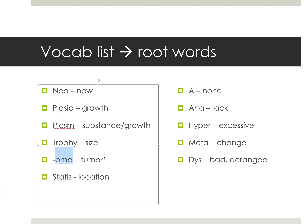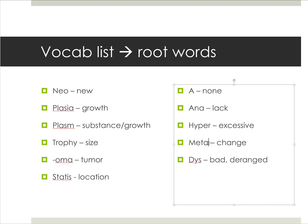'Static' refers to location — when you're static, you're in one place, so 'stasis' refers to location. 'Metastatic' — 'meta' refers to change. We've already gone through 'metaplasia,' which is a change in substance when tissue type converts to another. So 'metastasis' is a change in location, and that's a very important cornerstone in cancer terminology.